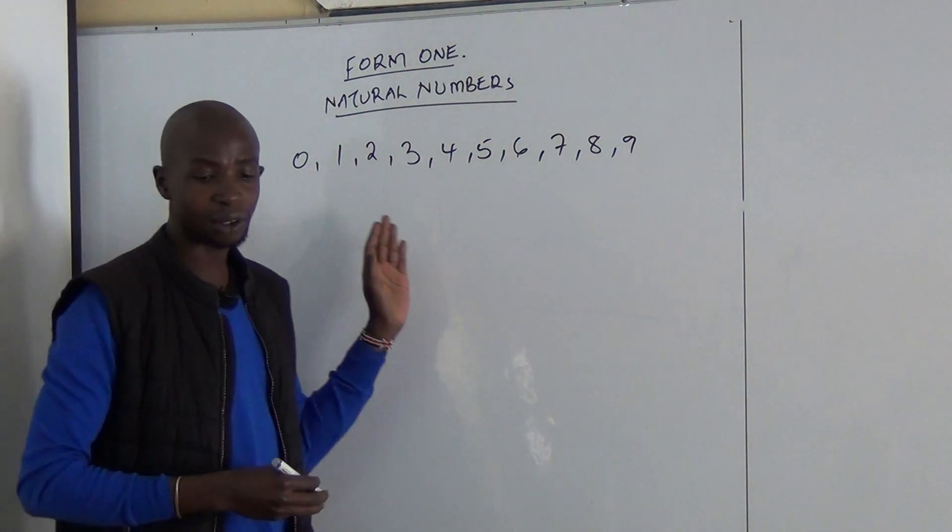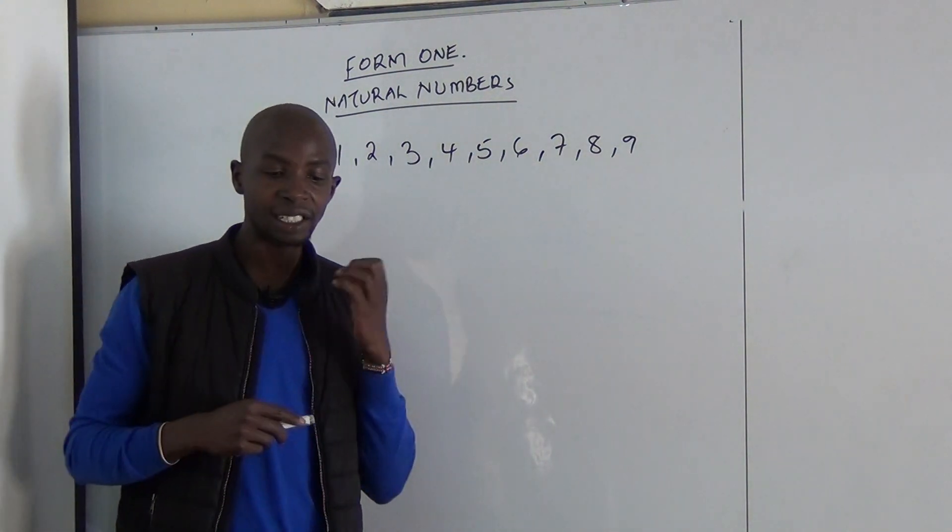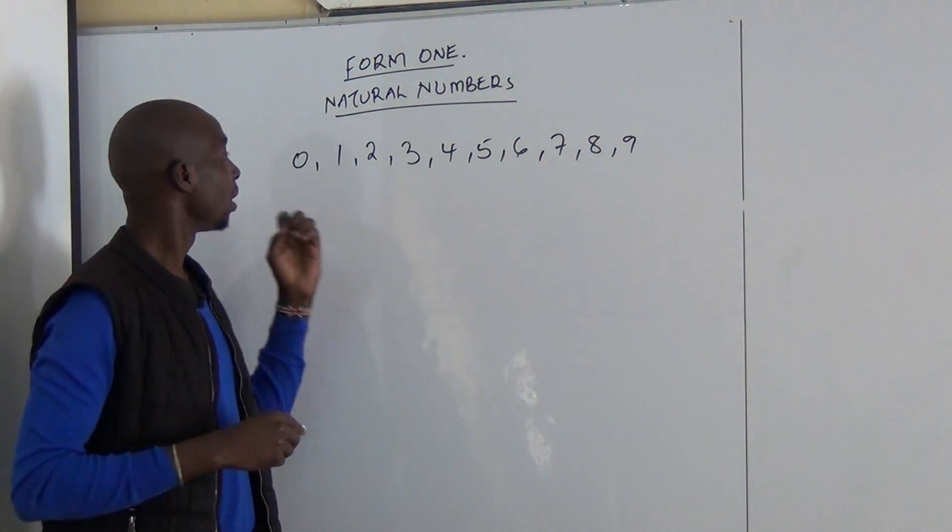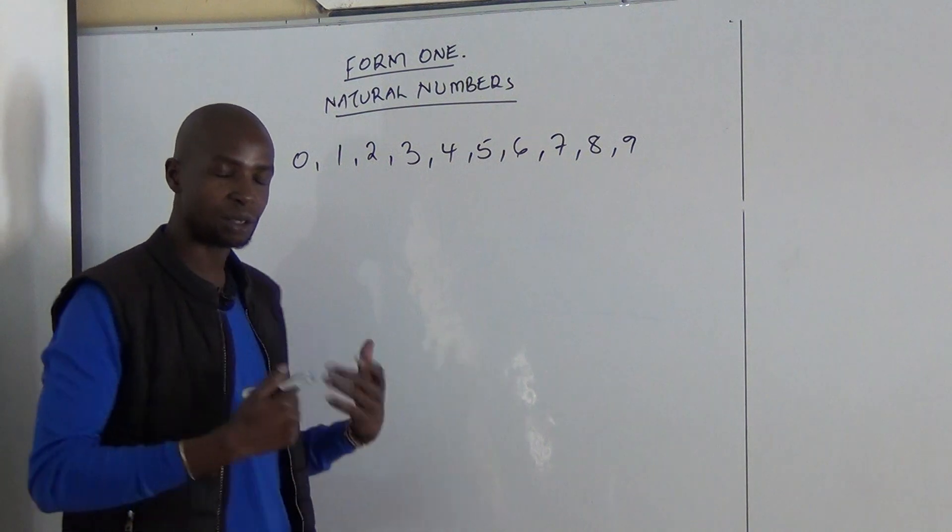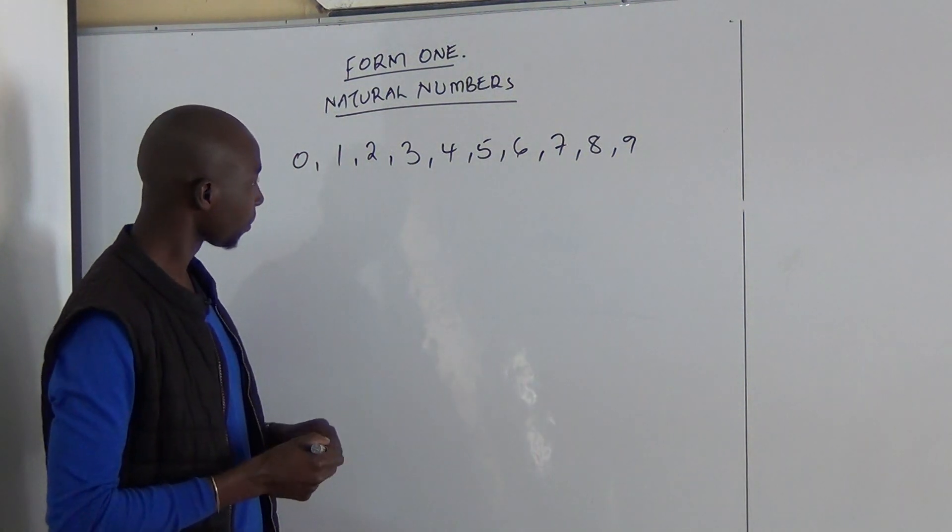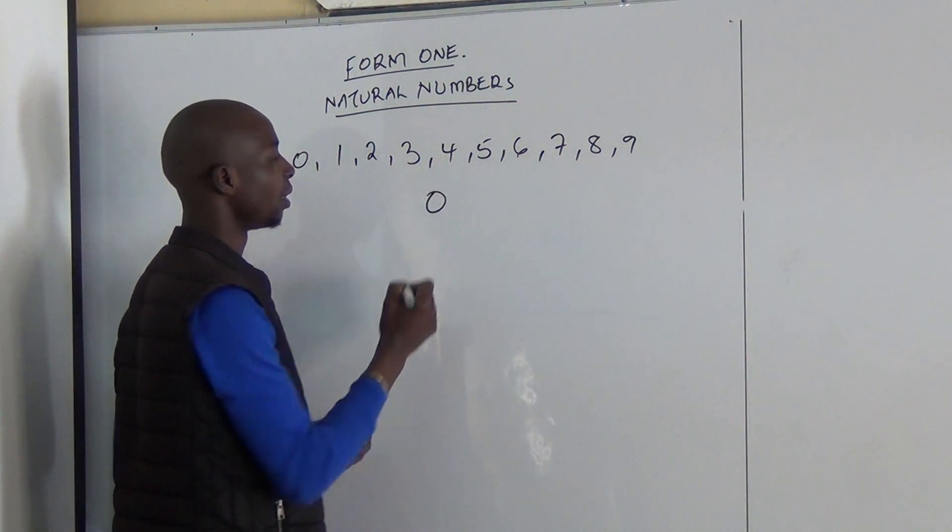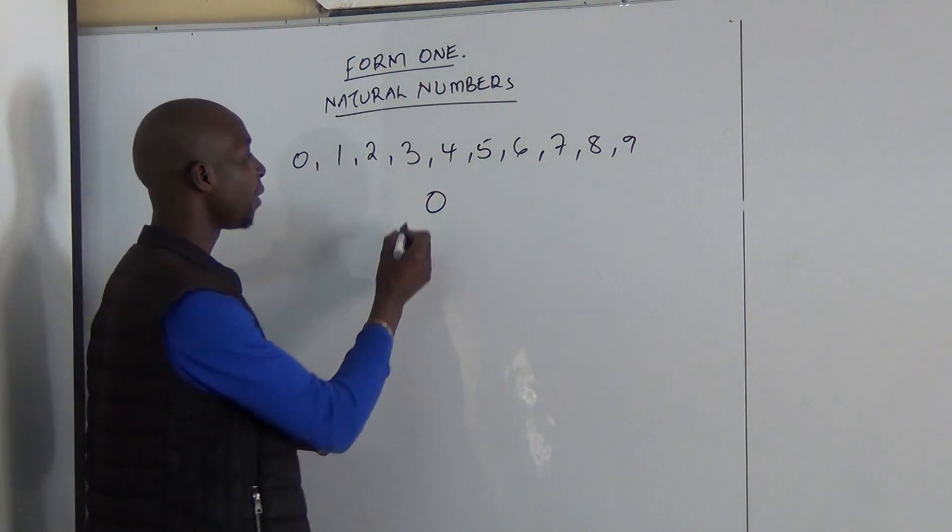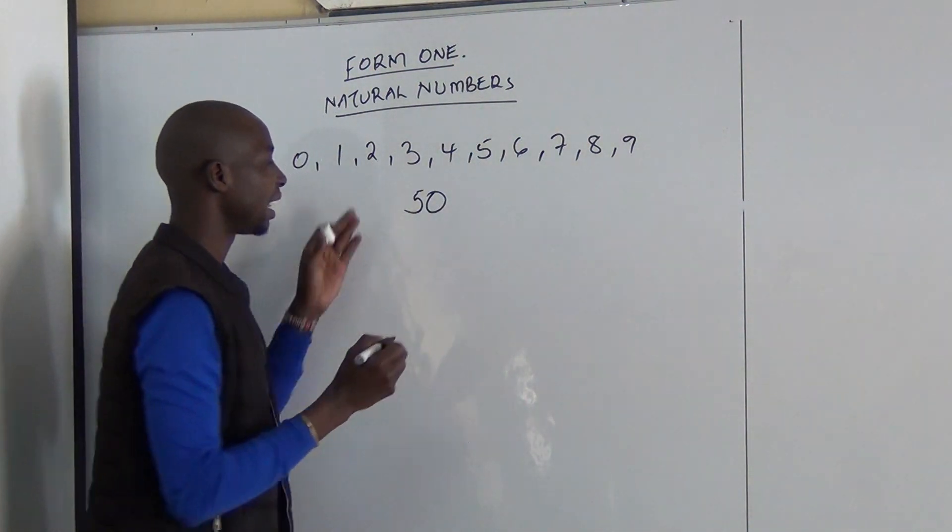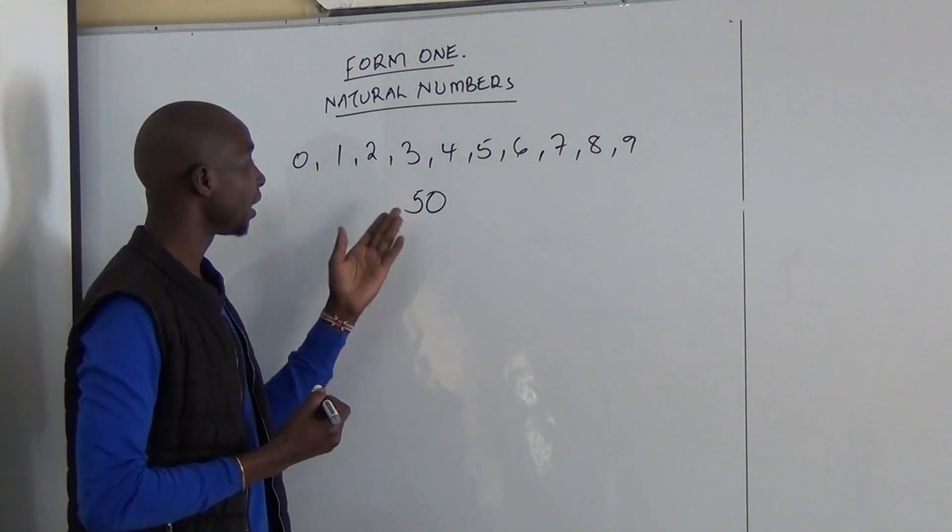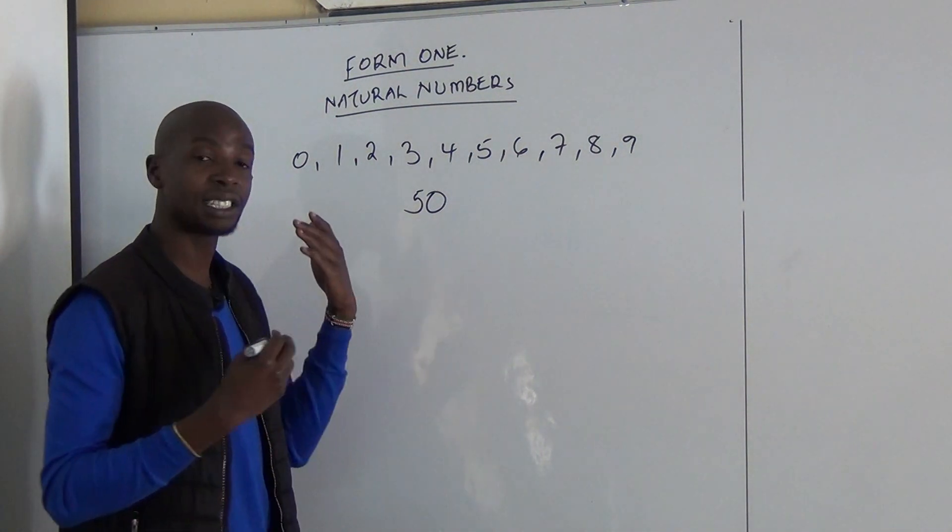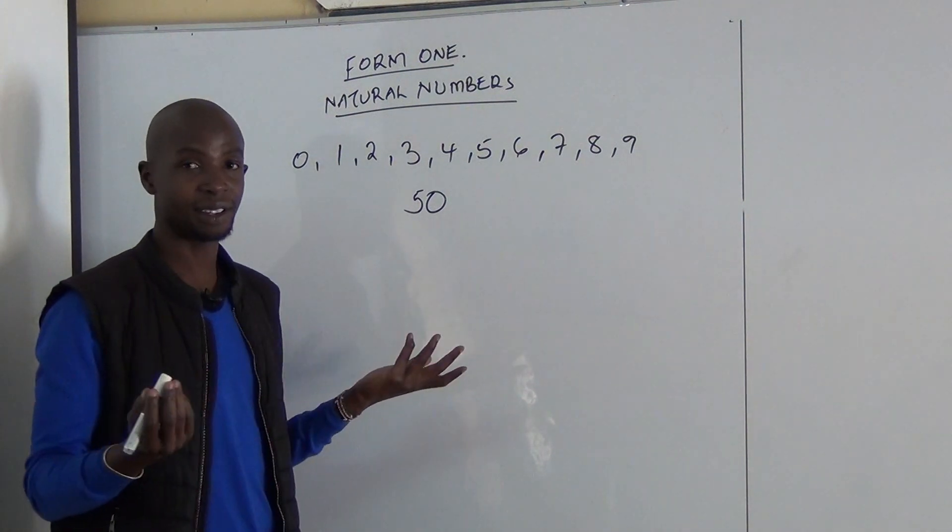So, normally 0 does not have any value but it is normally placed after a number for that number to have a value. For example, if you have 0, 0 is just 0. But if I put 5 beside it to the left side, it will become 50. 50 is much different from the 5.